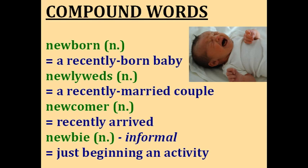Four compound words with the word new. A baby that has just recently been born is a newborn. Two people who have just recently been married are newlyweds — that comes from newly and wedded, the word for the marriage ceremony. Someone who has recently arrived at an event or joined a social group is a newcomer. And then we have the slang word newbie — an informal word for someone who is just beginning some activity and doesn't have much knowledge or experience yet. For example, if I'm just beginning computer programming, I could say I'm a newbie because I really don't know anything yet.